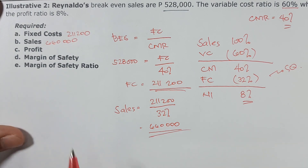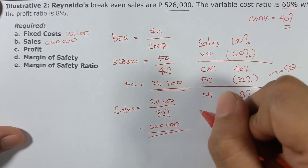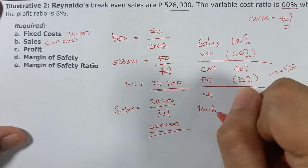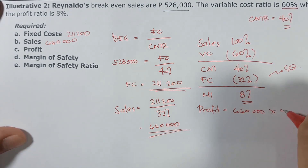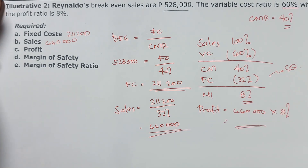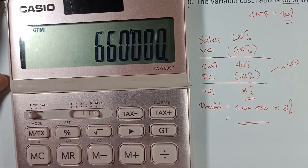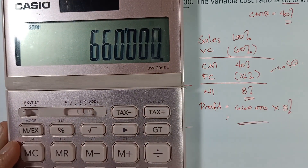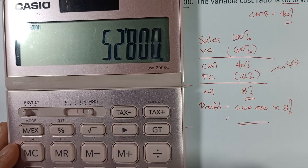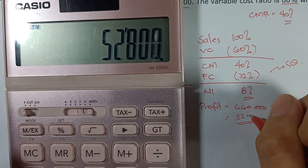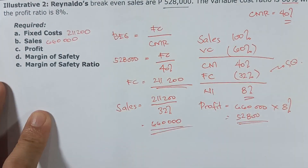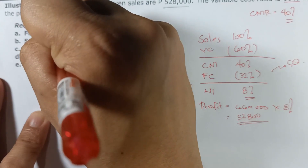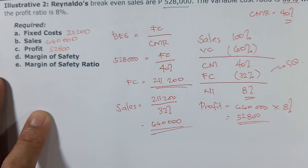Profit is 8% of sales. Since sales = 660,000, profit = 660,000 × 8% = 52,800. Requirement letter C: net income = 52,800.